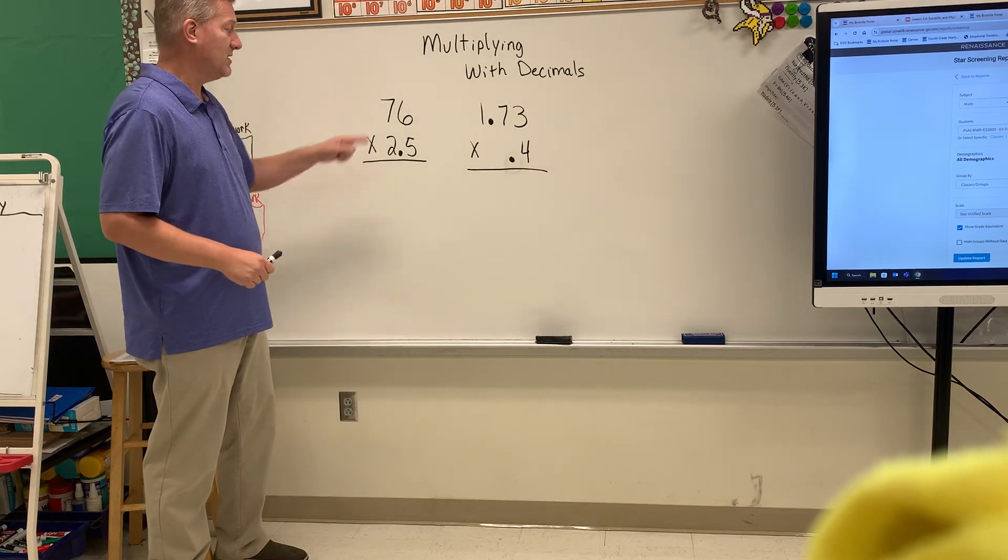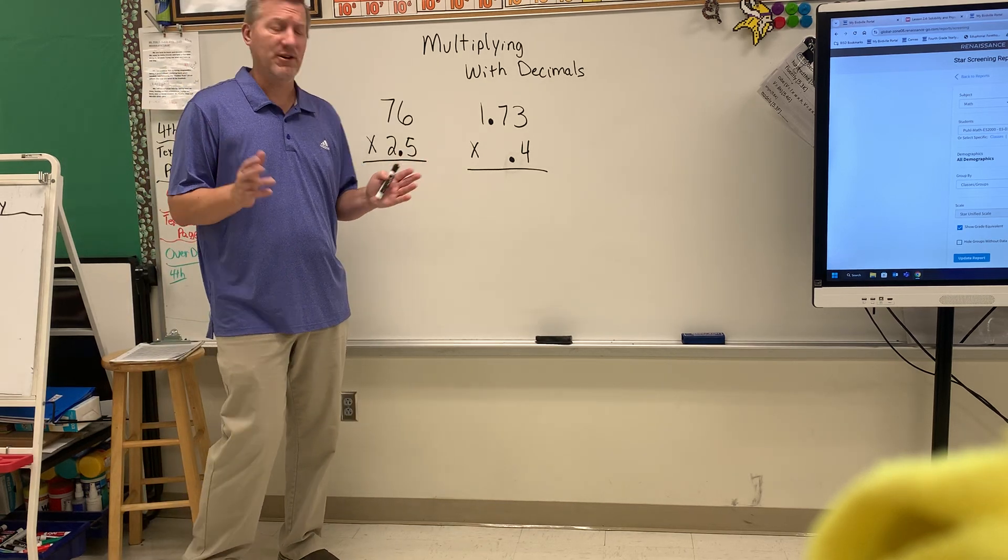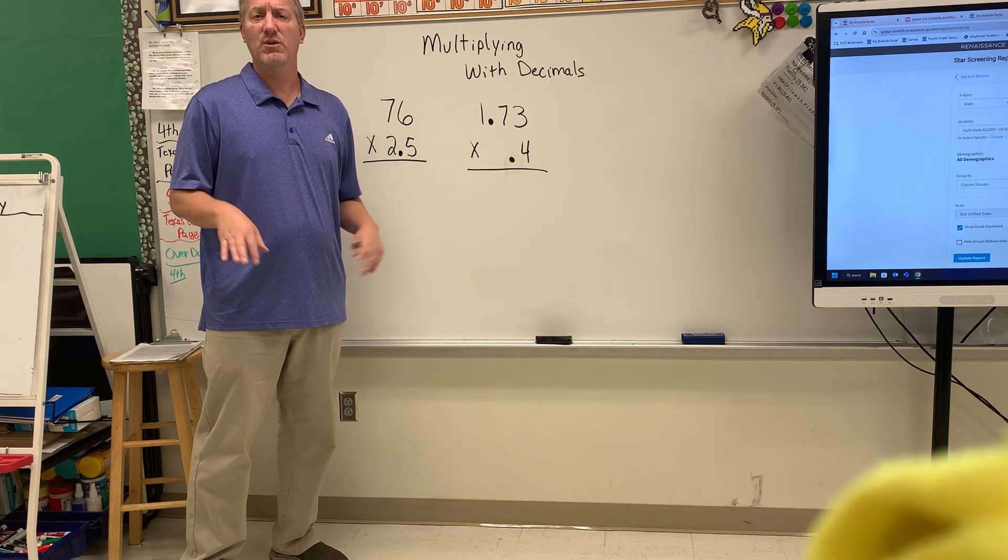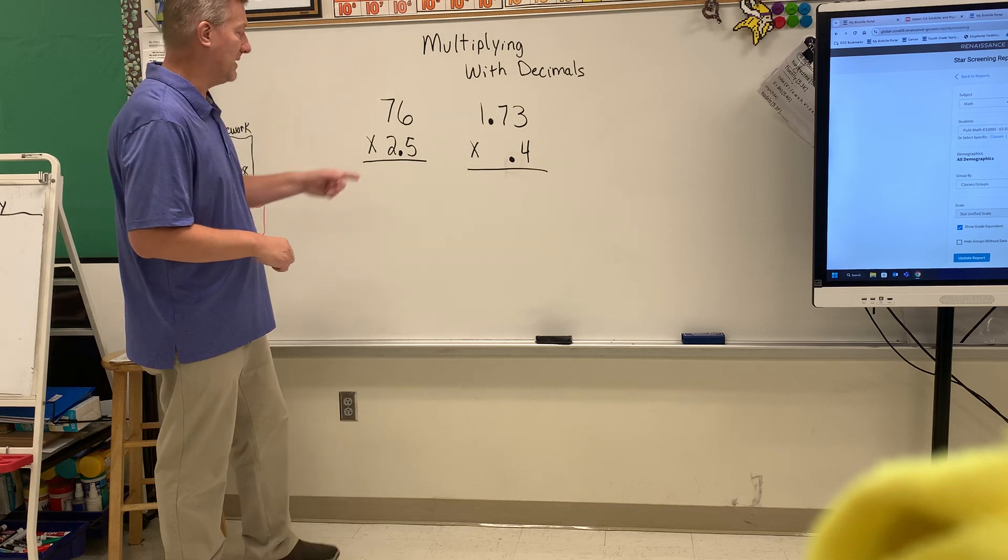First we're going to multiply the whole number. Now the thing you can do at first is just totally ignore the decimal. You don't have to worry about the decimal to the end. So all you're doing is multiplying the number.